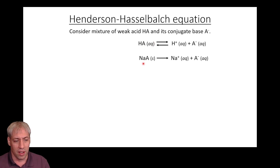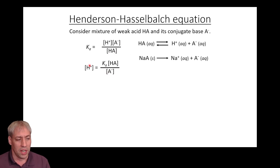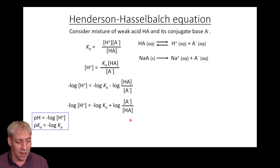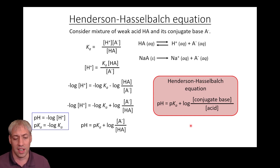Starting from a weak acid HA dissociating into H⁺ and A⁻, we write the Ka expression: Ka = [H⁺][A⁻]/[HA]. Rearranging so H⁺ is on the left and taking the negative log of both sides — using log rules and inverting the numerator and denominator — we get: pH = pKa + log([A⁻]/[HA]). That is the Henderson-Hasselbalch equation.